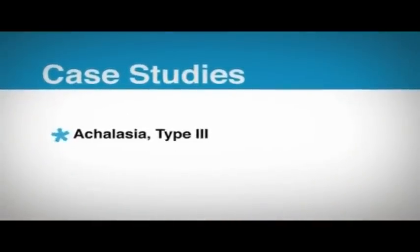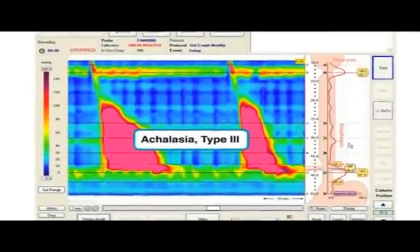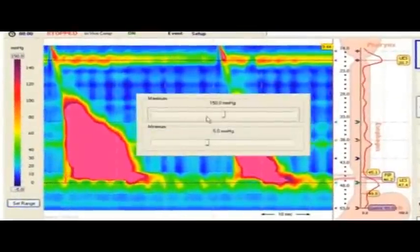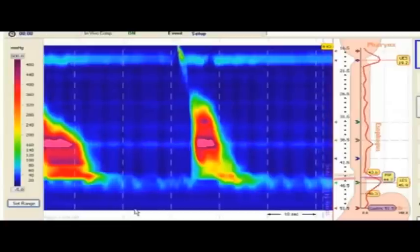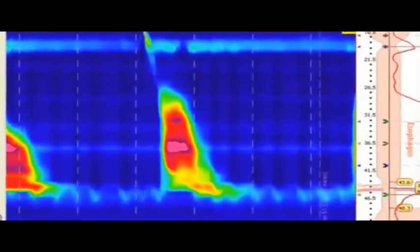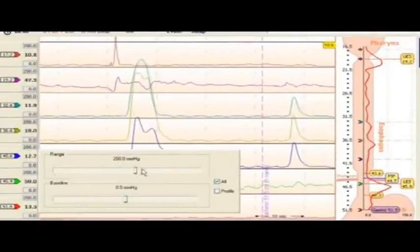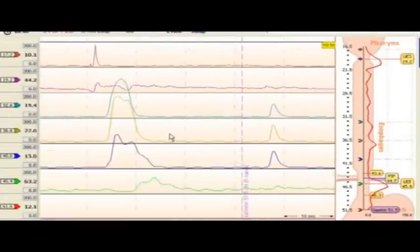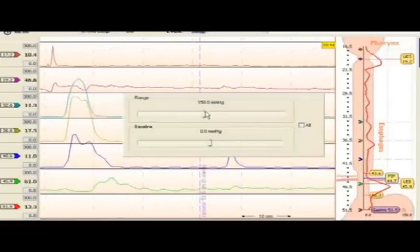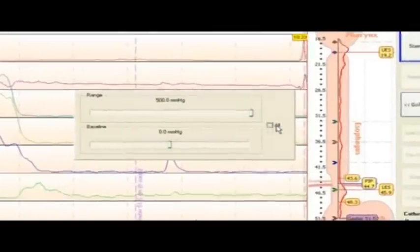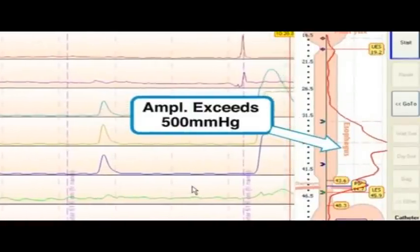Achalasia type 3. Adjusting the pressure scale, we see that peak pressures exceed 500 millimeters of mercury. We similarly adjust the line trace amplitudes. Note that the LES does not sufficiently relax. And observe the high wave amplitude in the pressure profile display.